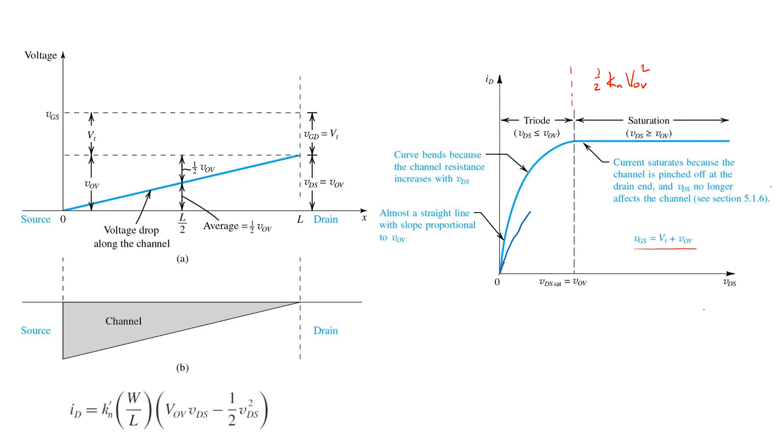And since we've got a lower value of VGS, we've got a lower associated overdrive voltage. So VDS sat decreases, and we expect the curve to start to flatten sooner. So we would expect the curve like this for a lower value of VGS.